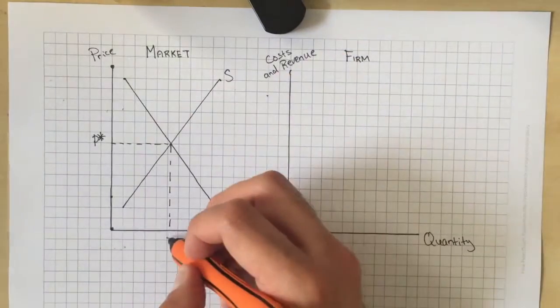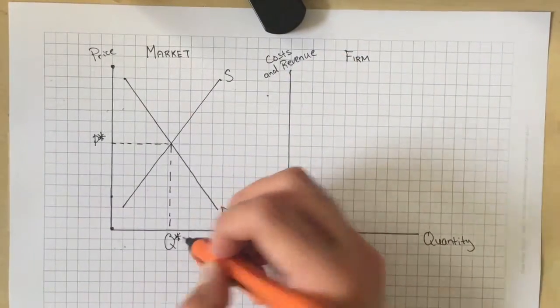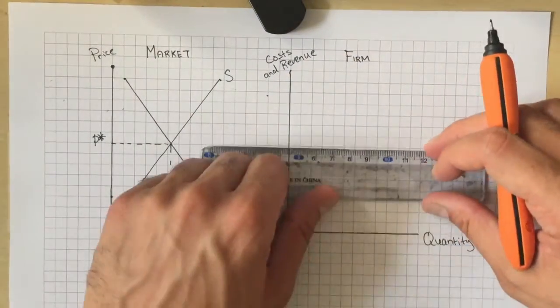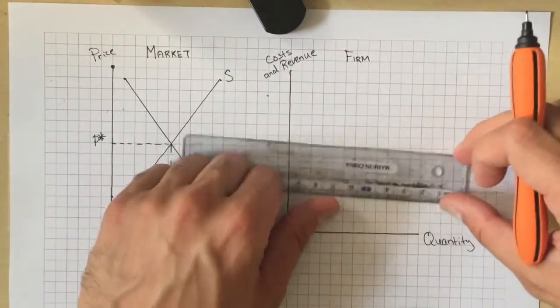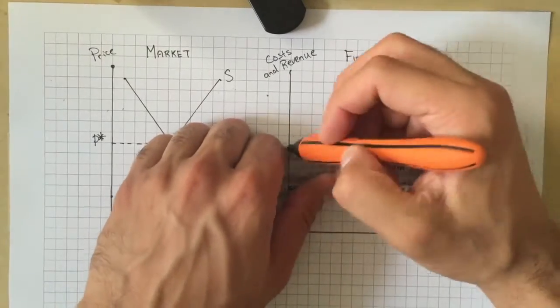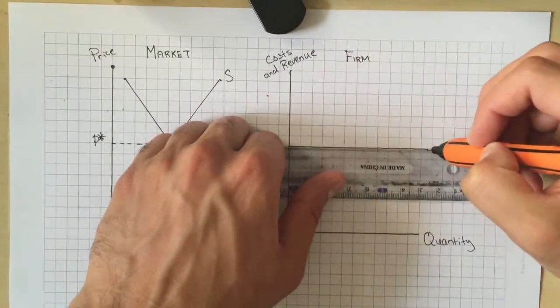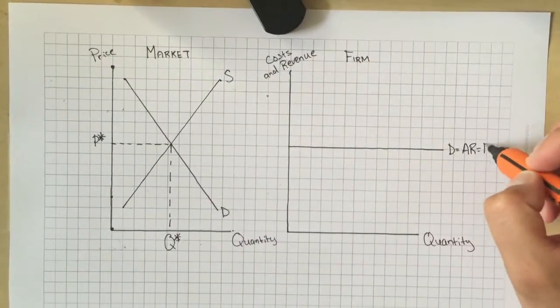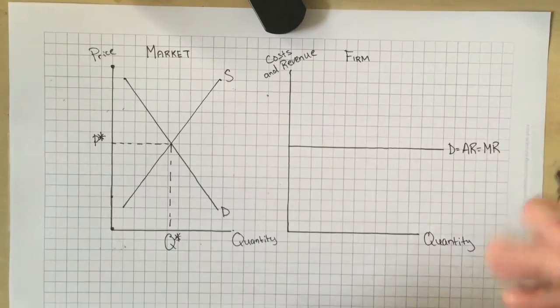Then I'm going to take this price across to the firm, because the firm is a price taker — they have to take the price set in the market. So I'm going to make this my demand curve and my average revenue and marginal revenue curve.